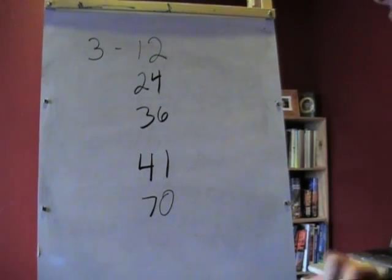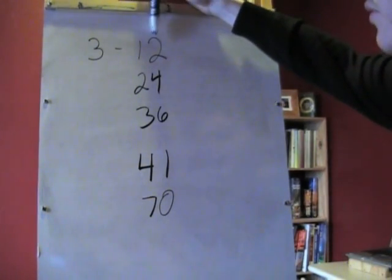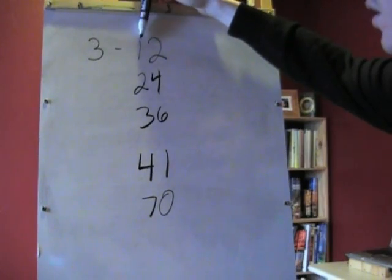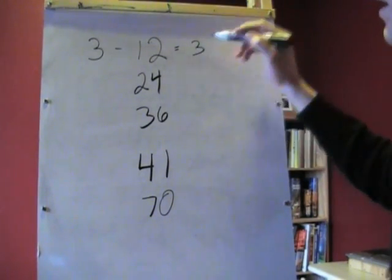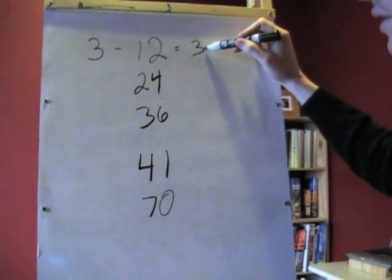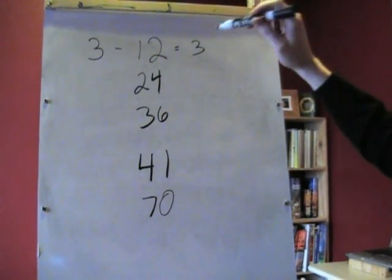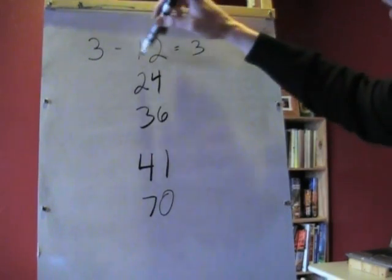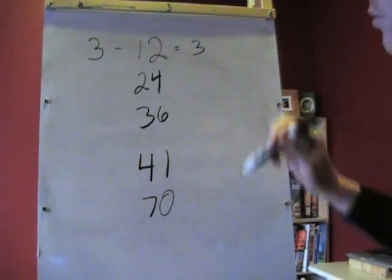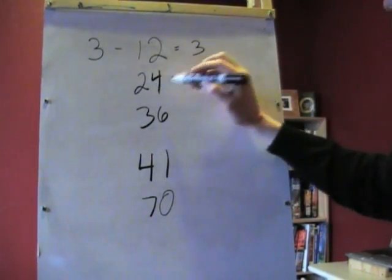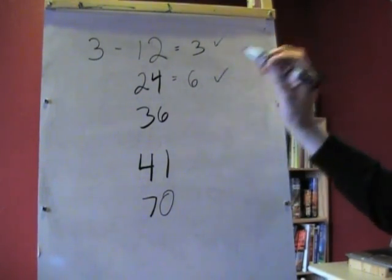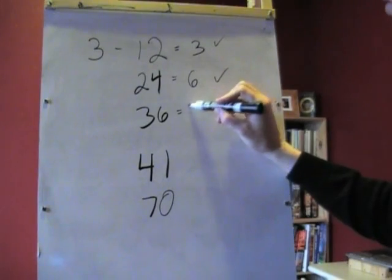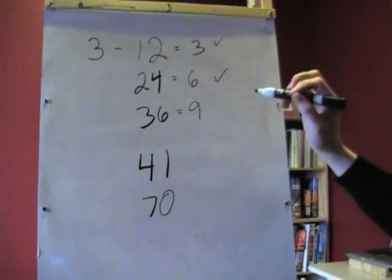The trick with 3 is that you take the numbers that you have, like 12, you have a 1 and a 2, and you add them together. If this number here is divisible by 3, then you know that this whole number here is also divisible by 3. You'll see this pattern again. 2 and 4 is 6. 6 is divisible by 3. Check.